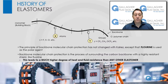The principle of backbone molecular chain protection has not changed with CalRez, except that fluorine is used as a polar agent. The principle of backbone molecular chain protection is the process of surrounding the carbon backbone with a highly resistant shield — in this case, surrounding it with fluorine. This leads to a much higher degree of heat and fluid resistance than any other elastomer.